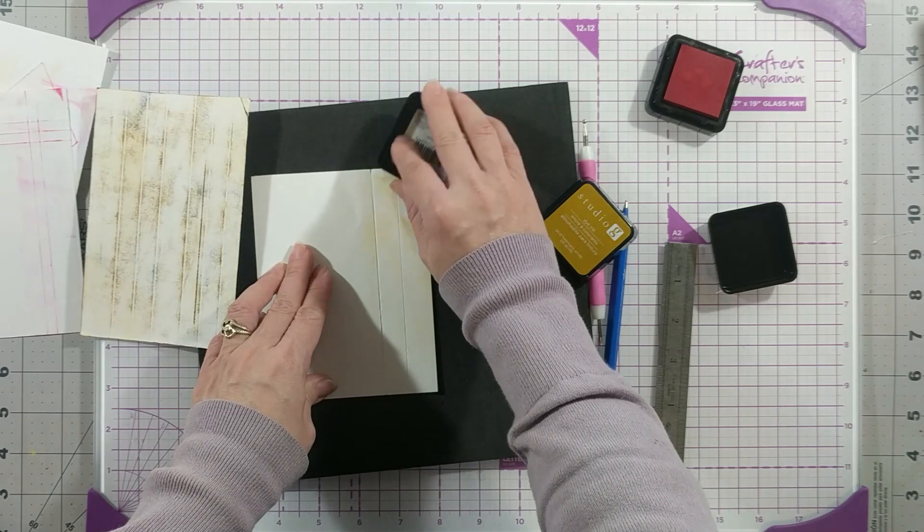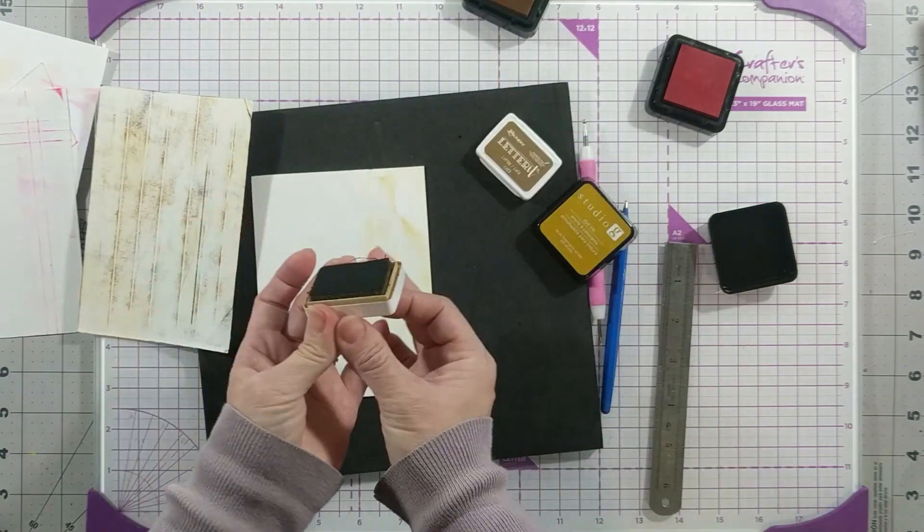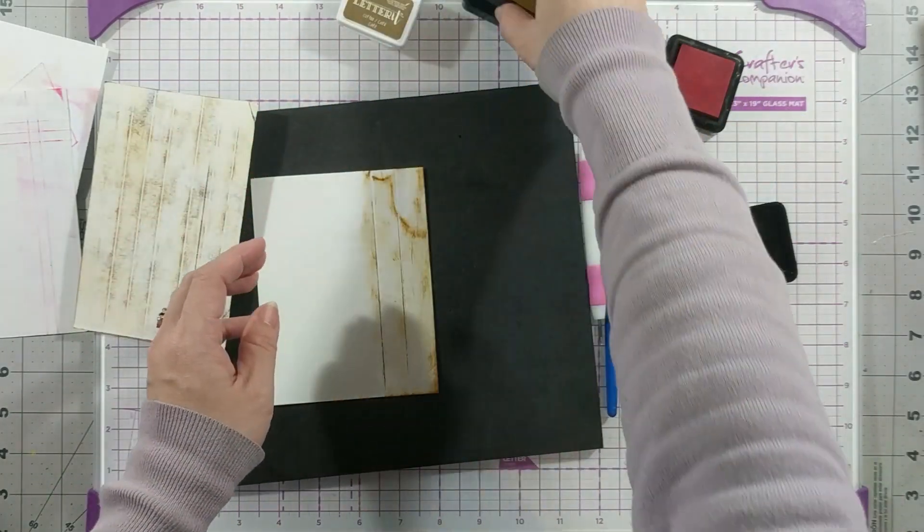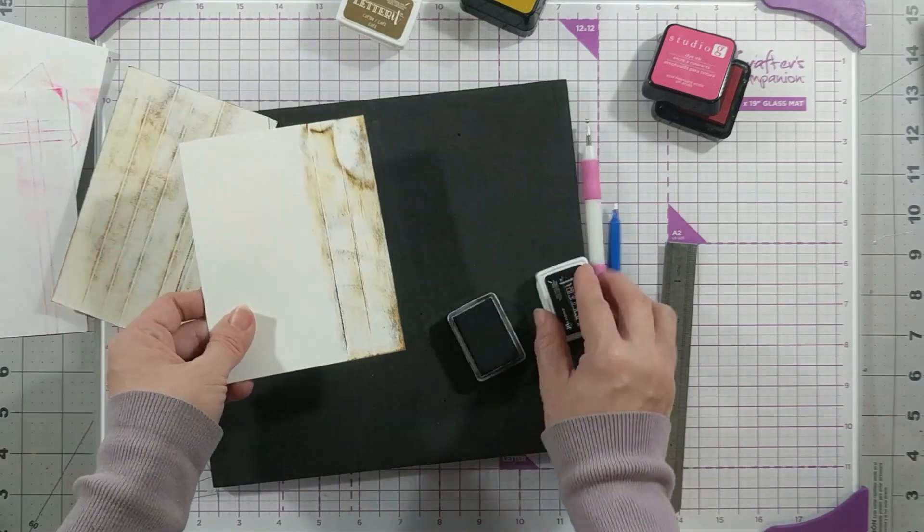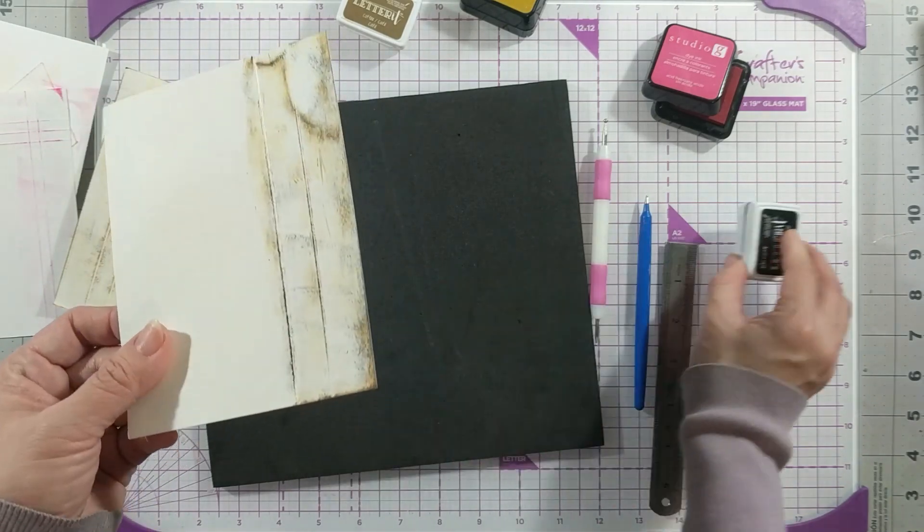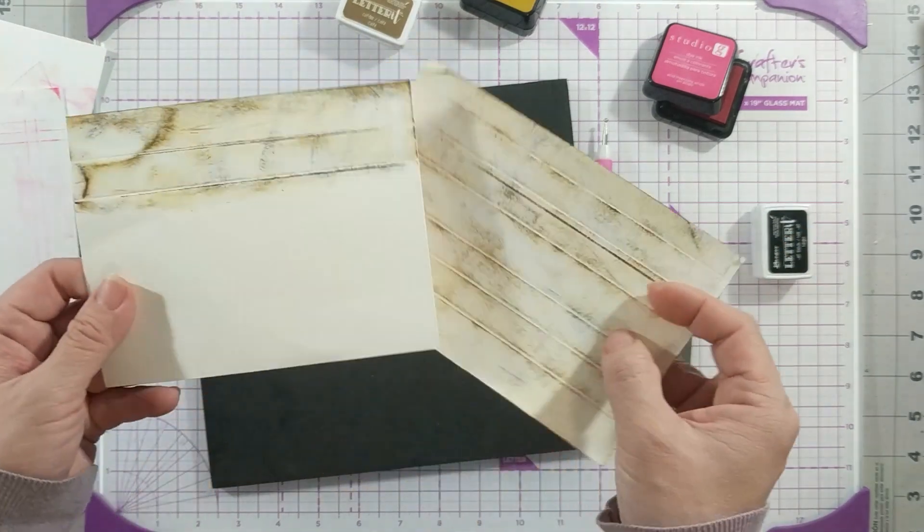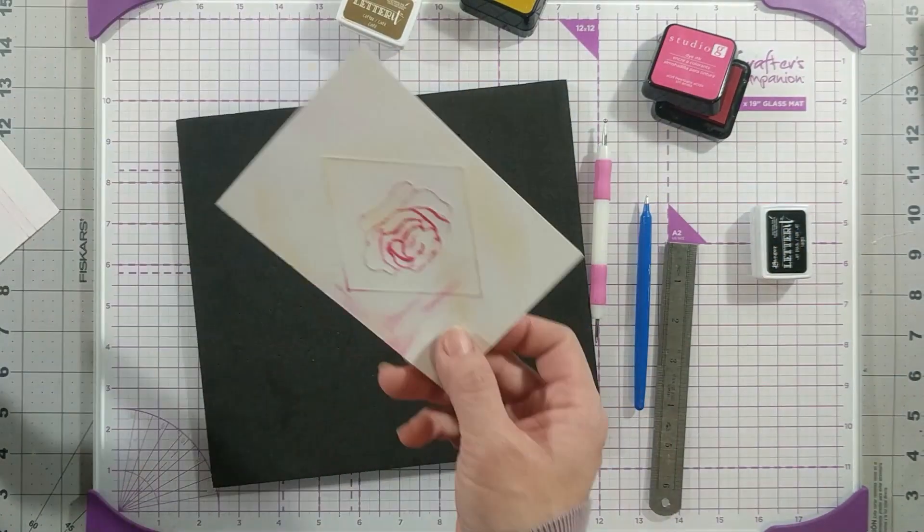And I just ran my ink pad across it—a couple different ink pads—and I also used a little bit of the black one. And I call it faux wood, if you agree with me. If you don't, it's fine, because beauty is in the eye of the beholder. So this is how I made this one.